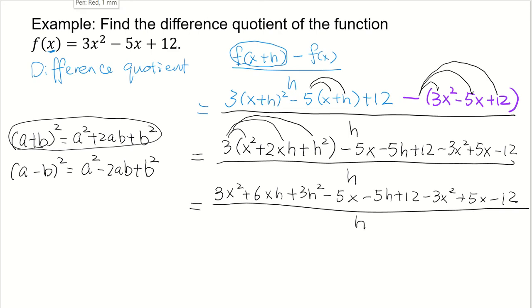So let's cancel out some like terms. 3x squared and negative 3x squared, these two cancel out. And what else can I cancel out? This term, negative 5x and positive 5x, those two cancel out. And also, another pair of like terms is this 12 and this negative 12, they cancel out.